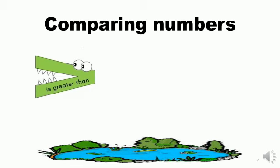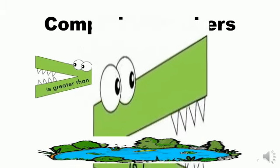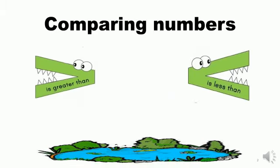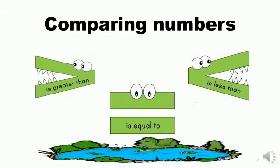The bigger number this time must be on the left side. What about this sign? It's less than. The alligator this time is opening its mouth towards the right side. Come on kids, show me your right side! So then, the bigger number this time must be on the right side.